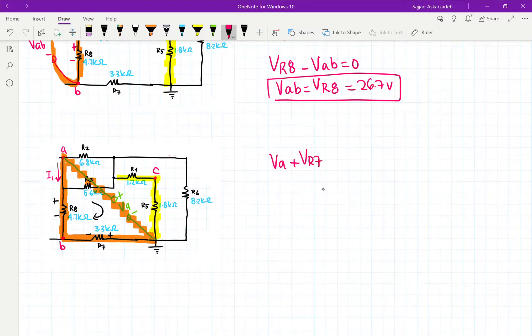VA is positive, plus VR7, and then minus VR8 is equal to 0. So then VA is equal to VR8 minus VR7.